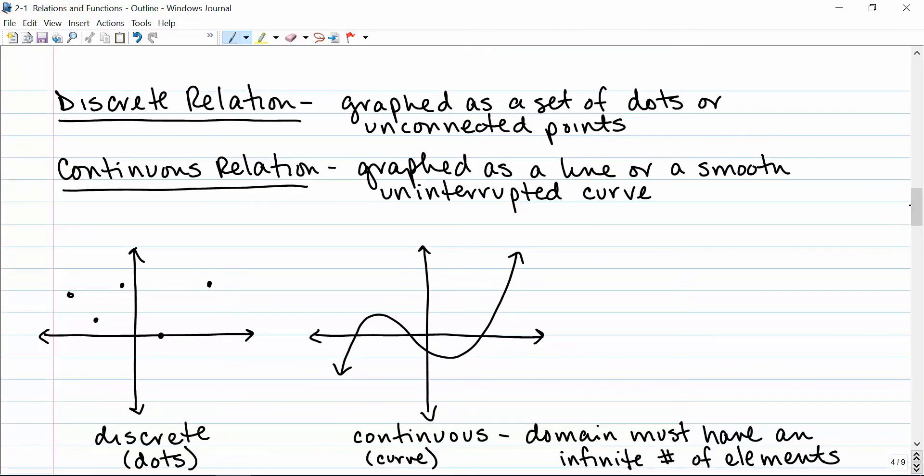A discrete relation is graphed as a set of dots or unconnected points, just a bunch of random points on the coordinate plane. A continuous relation is graphed as a line or a smooth, uninterrupted curve. The way I remember this, if it's discrete, it's made up of dots. If it's continuous, it's a curve. And in a continuous relation, the domain must have an infinite number of elements. In other words, x can be anything, all real numbers.